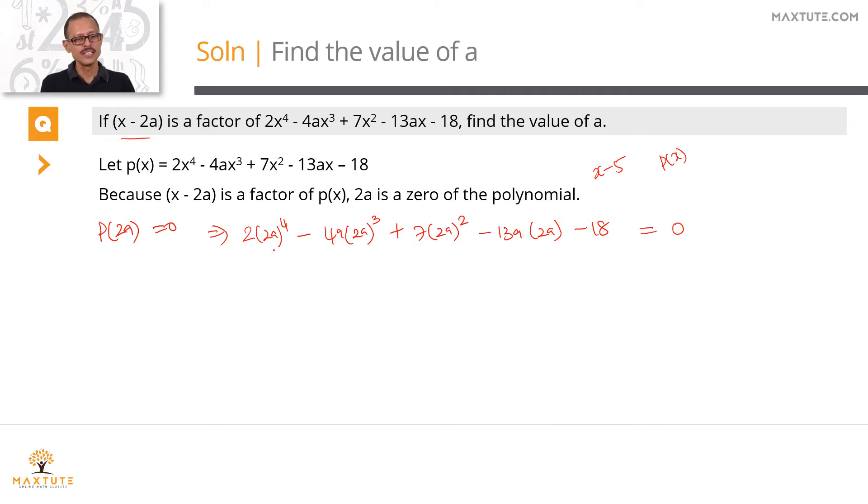Let's expand each of these expressions. (2a)^4 is equal to 16a^4. That times 2 will make it 32a^4. (2a)^3 is 8a^3. 8a^3 times 4a is 32a^4. So 32a^4 gets cancelled with 32a^4. Plus (2a)^2, which is 4a^2 times 7 is 28a^2 minus 13 times 2 or 26a times a is 26a^2 minus 18 equals 0.